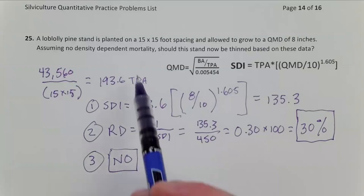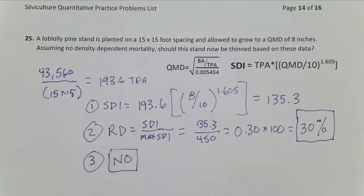So there's one extra step at the beginning, calculate trees per acre. But otherwise, it's the exact same problem we've already seen previously a couple times, determining thinning regimes using SDI and relative density.